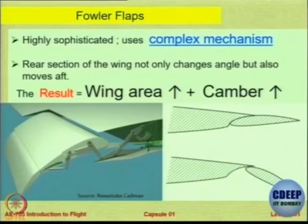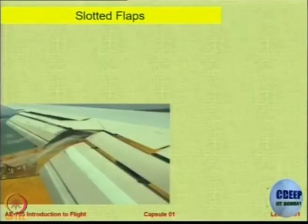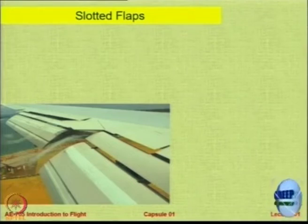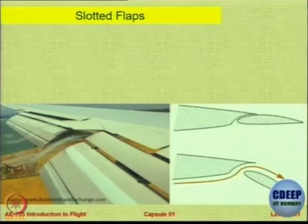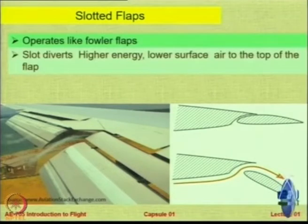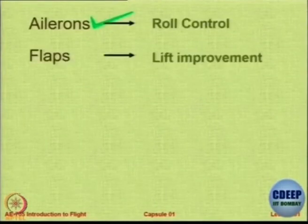Slotted flaps are flaps where you create an air gap between the two or three moving parts. This is an example of double slotted Fowler flaps, both inboard and outboard. So ailerons give you roll control, flaps give you lift improvement.